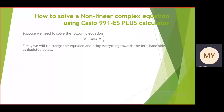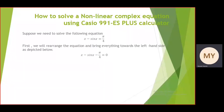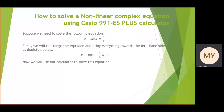To solve this equation, first of all what we will do is rearrange the equation and bring everything towards the left hand side. The equation becomes x minus sin(x) minus pi by 4 equals to 0.